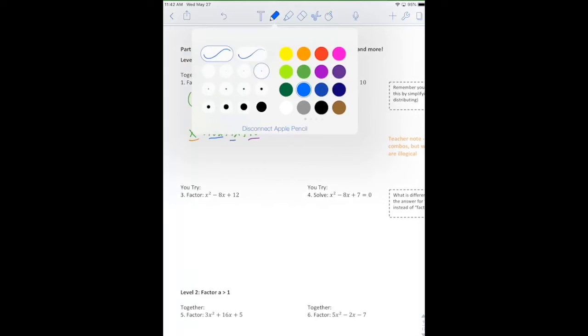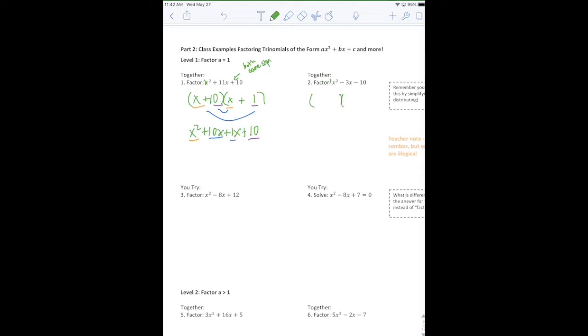On problem number two, we're going to look for something similar. So two numbers that multiply to negative 10 and add to negative three. So we're going to go with x's. We know that we want a five and a two because in my head, I can say, five times two is going to give me 10. And I can subtract them to three. Since it's a negative three, I know that I want my negative to go with the five.